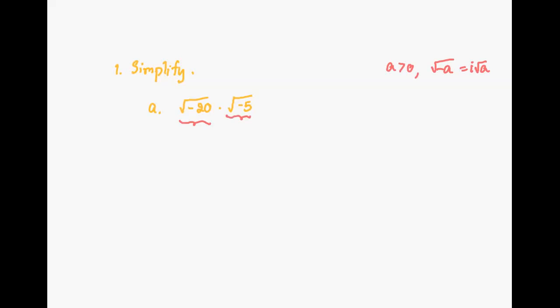The first term becomes square root of 20 multiplied by i. You can write i in the front or in the back — it doesn't matter, as long as i is not inside the radical. So we write it as i times square root of 20, and the second term becomes i times square root of 5. Then we rewrite it as i times i — that is, i squared — multiplied by the square root of 20 times square root of 5.